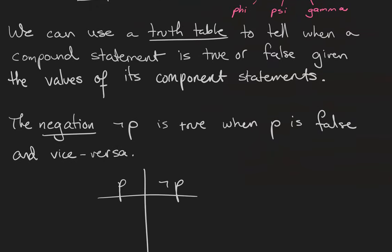A truth table is a device that allows us to tell when a compound statement is true or false, given the values of its component statements. We're going to go through the list of connectives and see the truth table for each one of them, and after that, we'll learn how to use truth tables on more complicated statements.